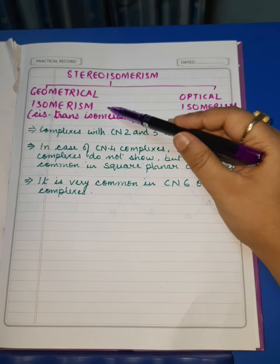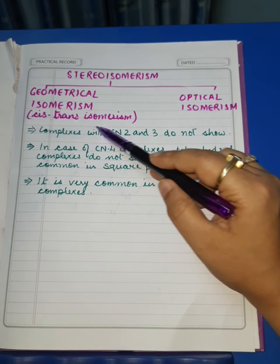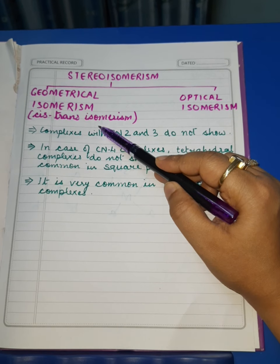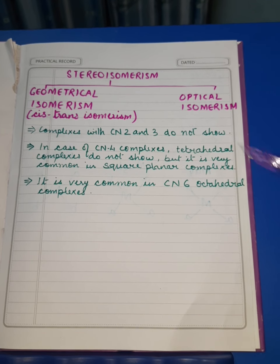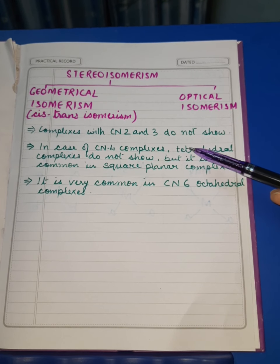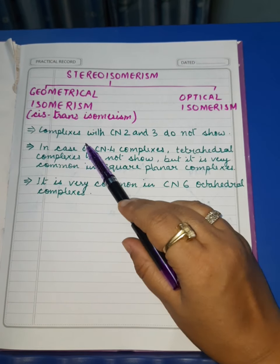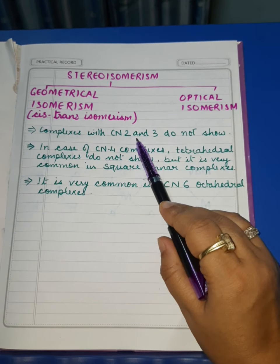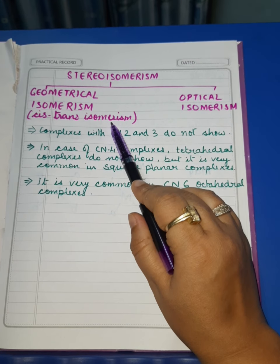Geometrical isomerism can also be called as cis-trans isomerism. First of all, we will discuss in detail about geometrical isomerism in this video. Some facts you need to know: complexes with coordination number 2 and 3 do not show geometrical isomerism.